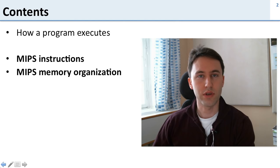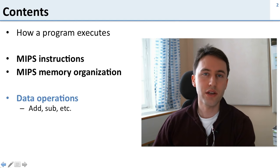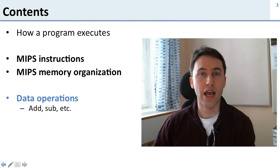We're going to spend some time looking at the memory organization of MIPS. We're going to talk about the register file, which is small and fast, versus the main memory, which is large and slow. Then we'll go through three important classes of instructions. The first one is data operations — addition, subtraction, multiplication — these are the instructions that actually do the computation.